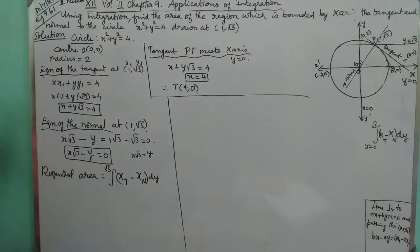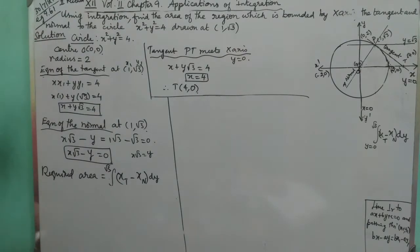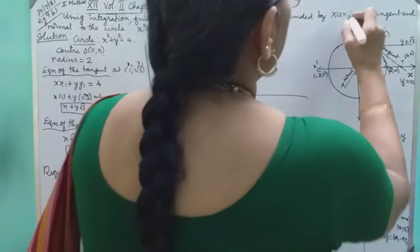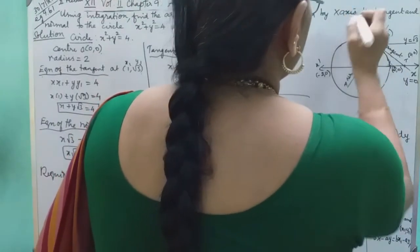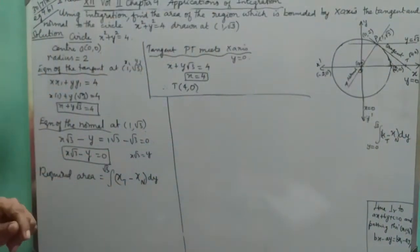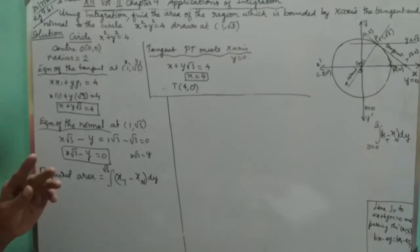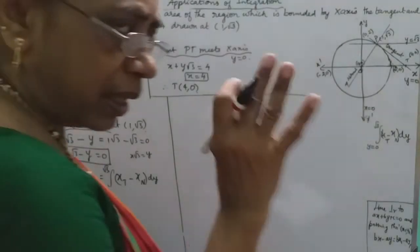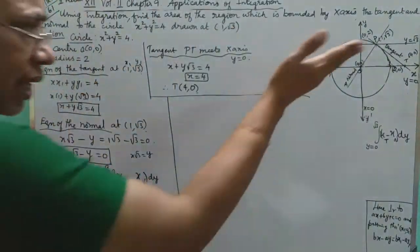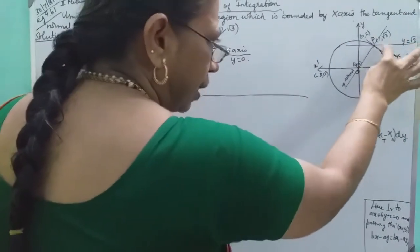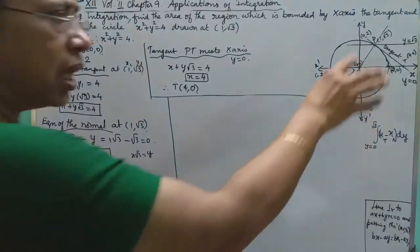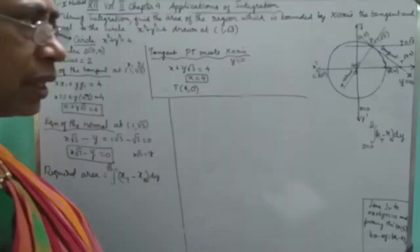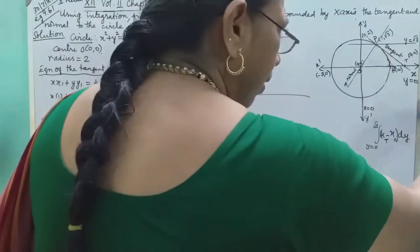Hello students. For example 9.61, second model, up and draw. Using integration, find the area of the region which is bounded by the x-axis, the tangent and normal to the circle drawn at the point (1, √3). In the circle, (1, √3) is the point where the tangent and normal are drawn.